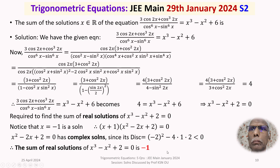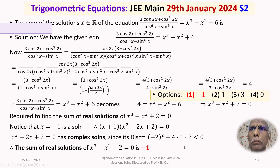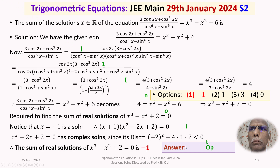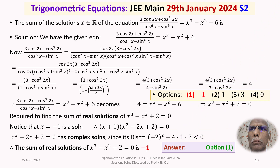The sum of real solutions of the given equation is -1. Looking at the options, -1 appears against option 1. Therefore the answer to this question is option 1.